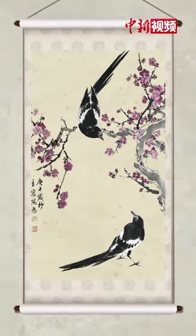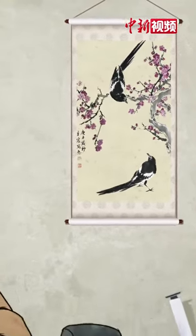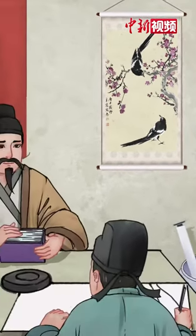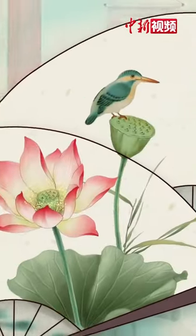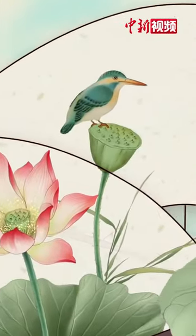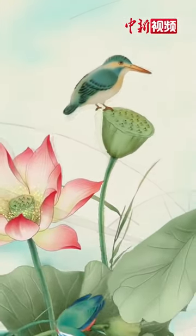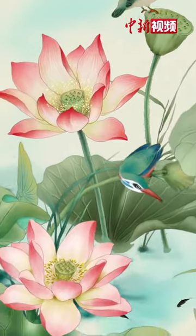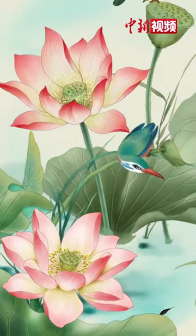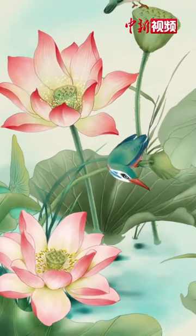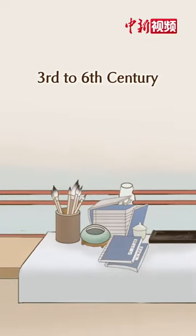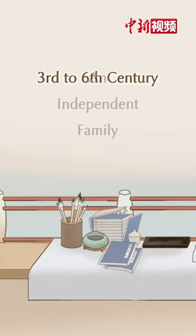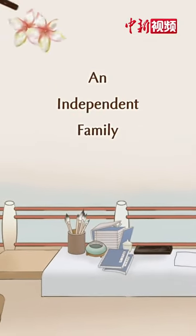Flower and bird painting is one of the three traditional Chinese painting families. Flowers, birds, animals, fish and insects are common themes. From the 3rd century to the 6th century, flower and bird painting became an independent family.